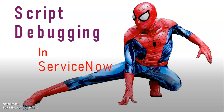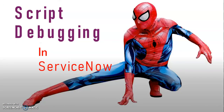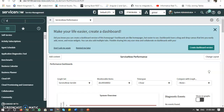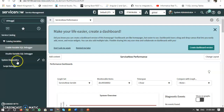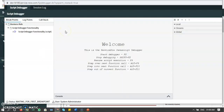Let me show you with an example how we can use script debugging in ServiceNow. It is very useful for fixing issues and also for understanding what processes a record is going through. I'm on my personal instance. You can find the Script Debugger in the left navigation — just search 'debugger'. It is under System Diagnostics. Let me open it.